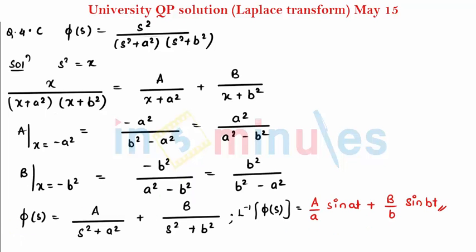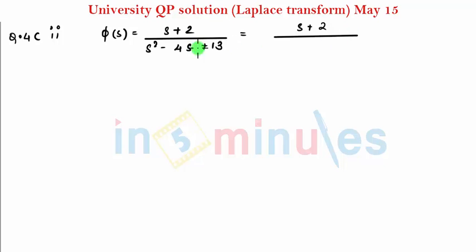Let's start with the next sum. That is my question number 4C second, so phi of S is S plus 2 divided by S squared minus 4S plus 13. You can check whether you get factors or not. Obviously you will not be getting factors. Since I am not getting factors here, I can change it to perfect square by completing the square.